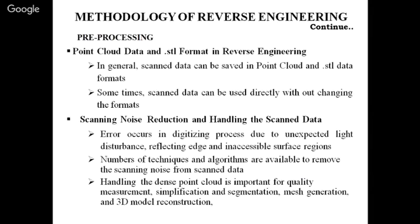In pre-processing there are 3 or 4 steps. First is to generate the scan data and save it in a desired format — point cloud data or STL format. Sometimes scan data can be used directly without changing format, for instance with Rapid Form software, which can directly exchange data between scan software and itself. With this software we can create a 3D model from a 2D scan form.